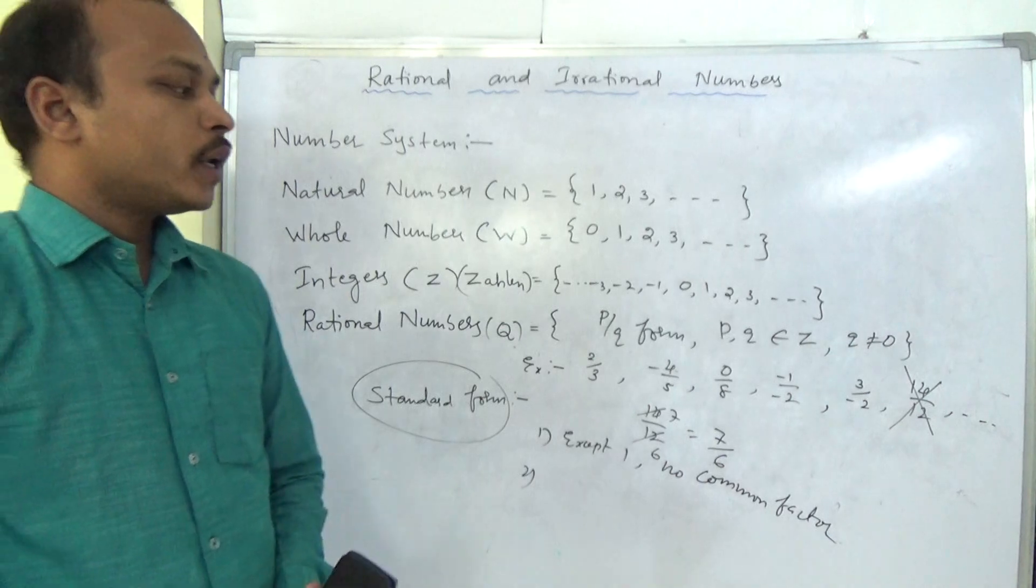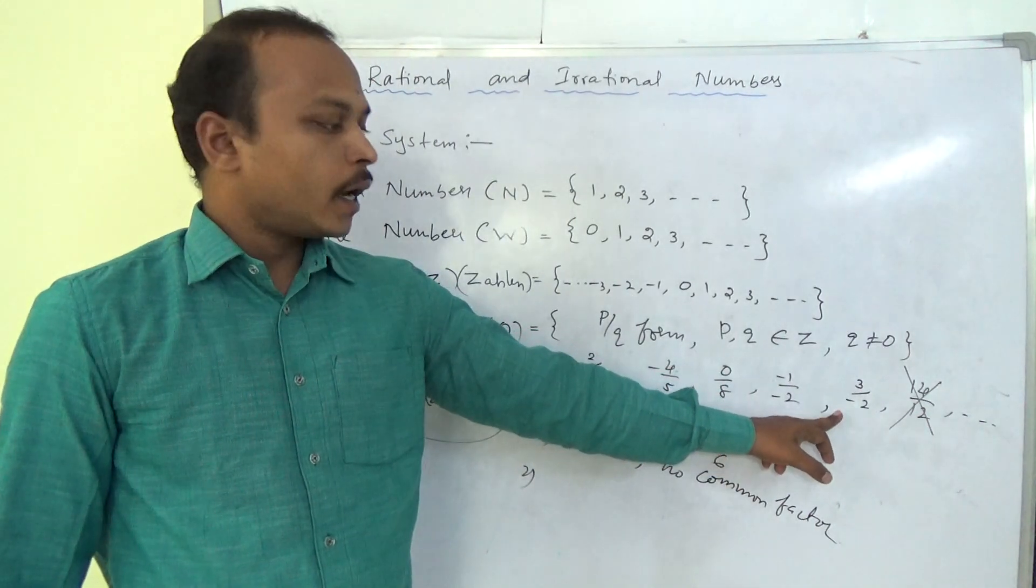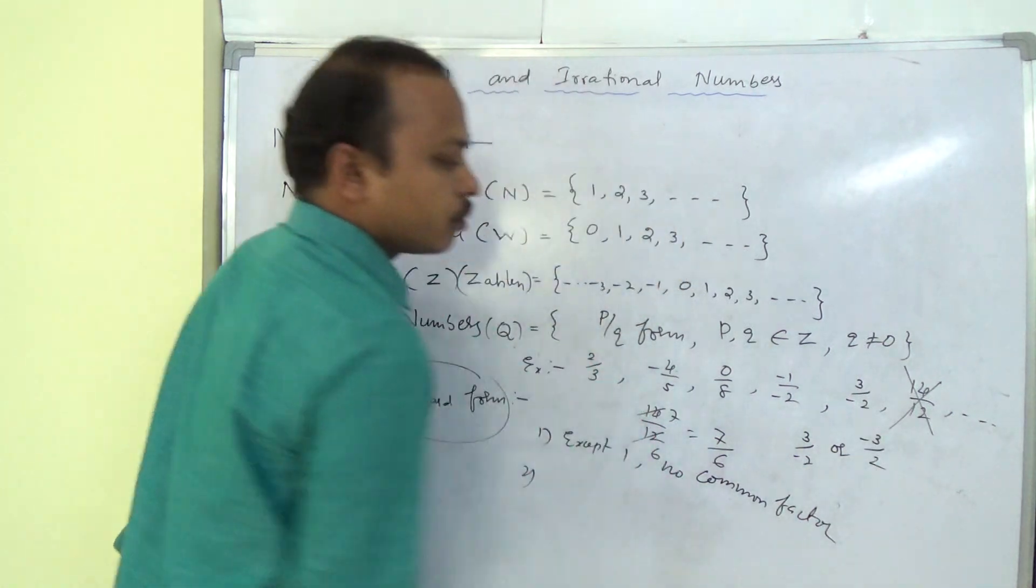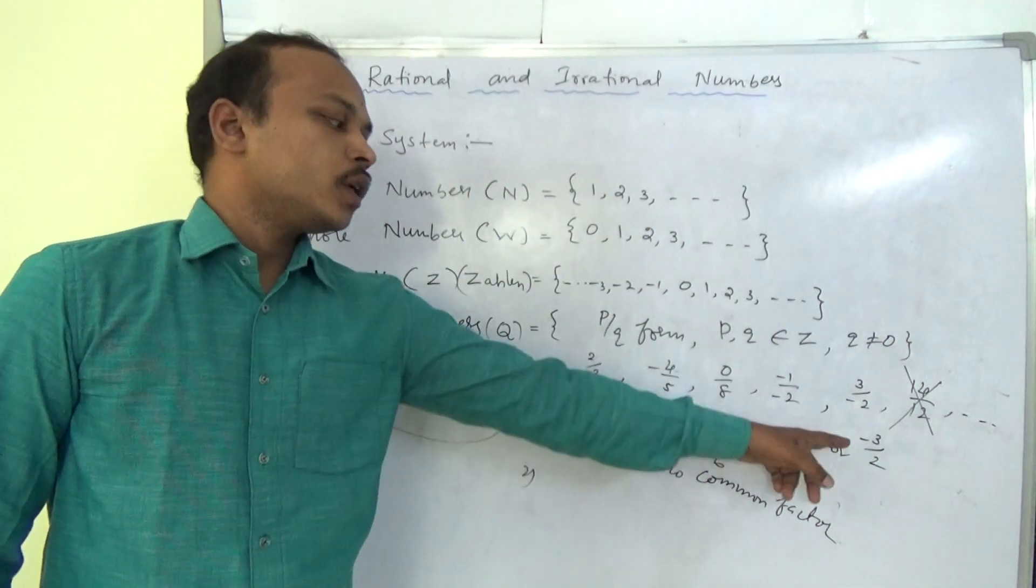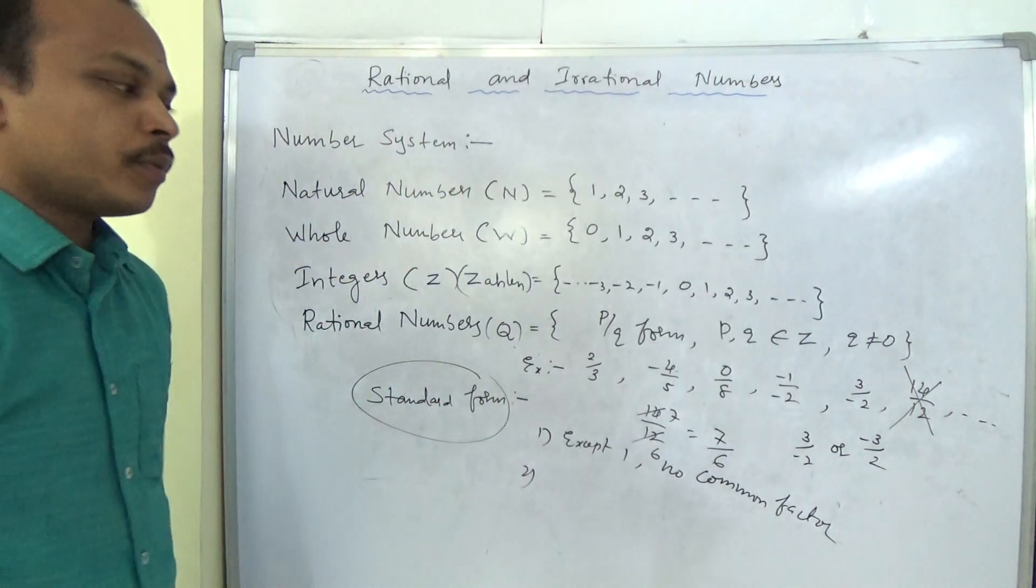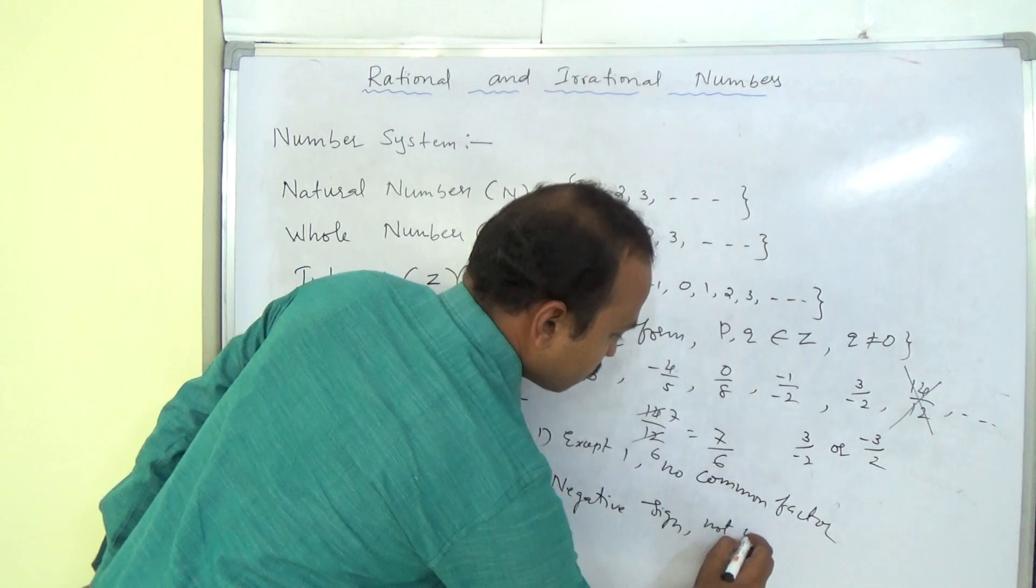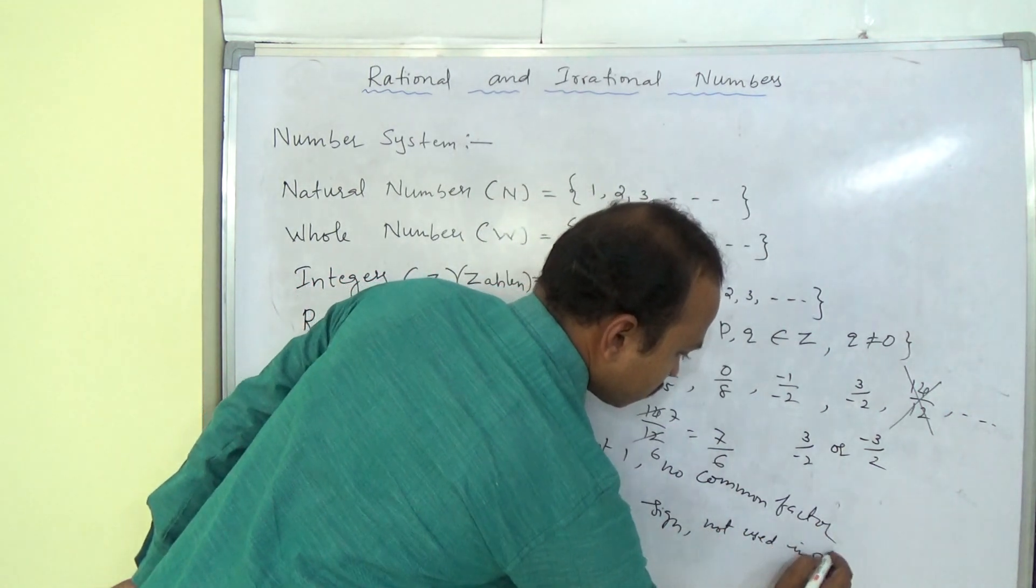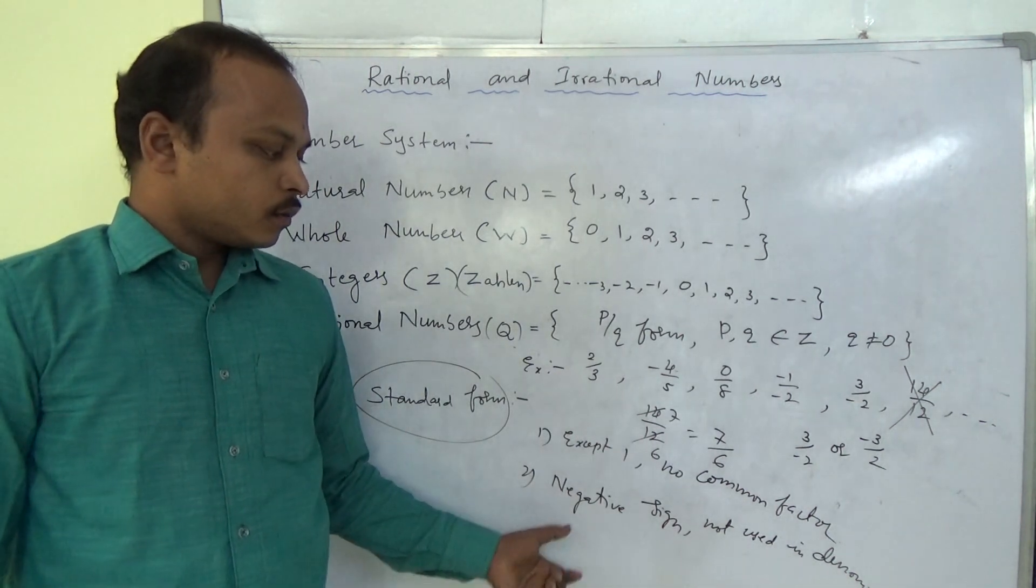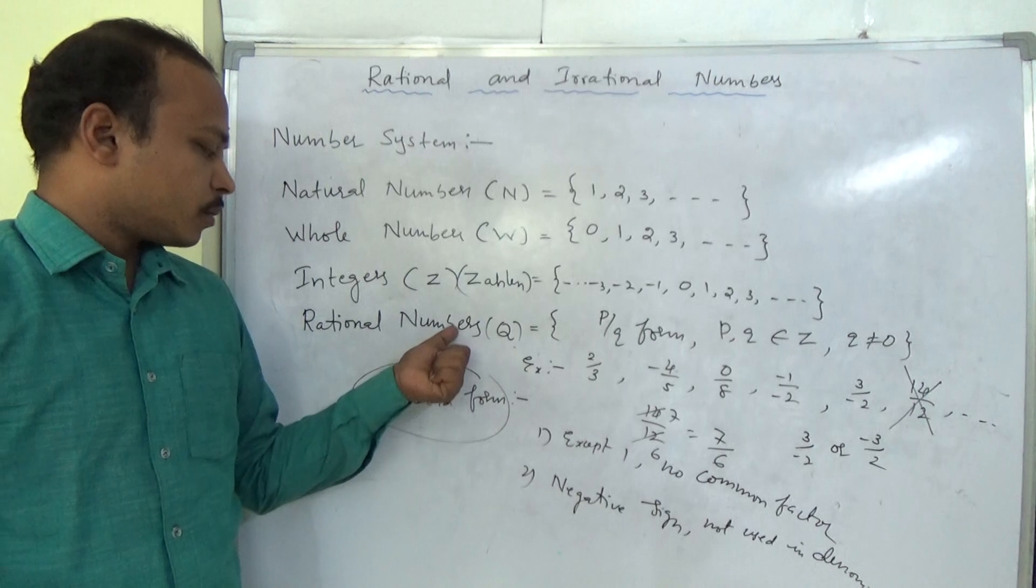Next one is no negative numbers should be in the denominator. So no negative sign. For example you see 3 by minus 2. Actually we should write this as minus 3 by 2. Both are equal. 3 by minus 2 or minus 3 by 2. Both are same but we need to write negative sign should be in the numerator place. This is one of the standard form. So negative sign should not be used in the denominator. So these two rules we will apply for standard forms. No common factor except 1 and there is no negative sign for the denominator. So in next chapters, next topics we will briefly discuss about rational numbers.